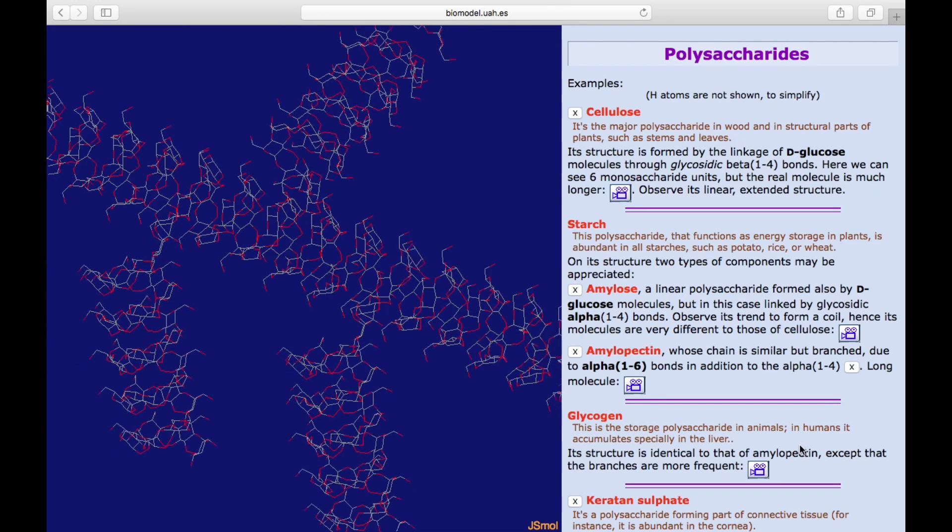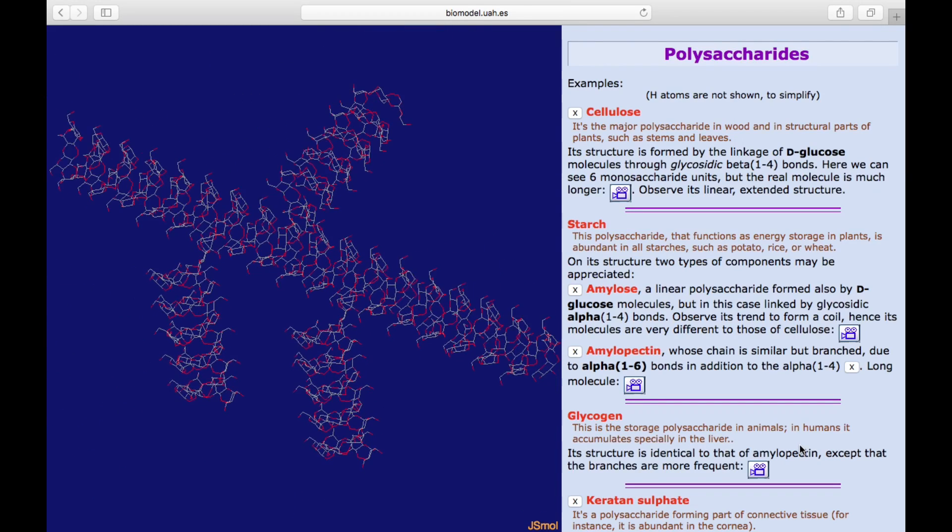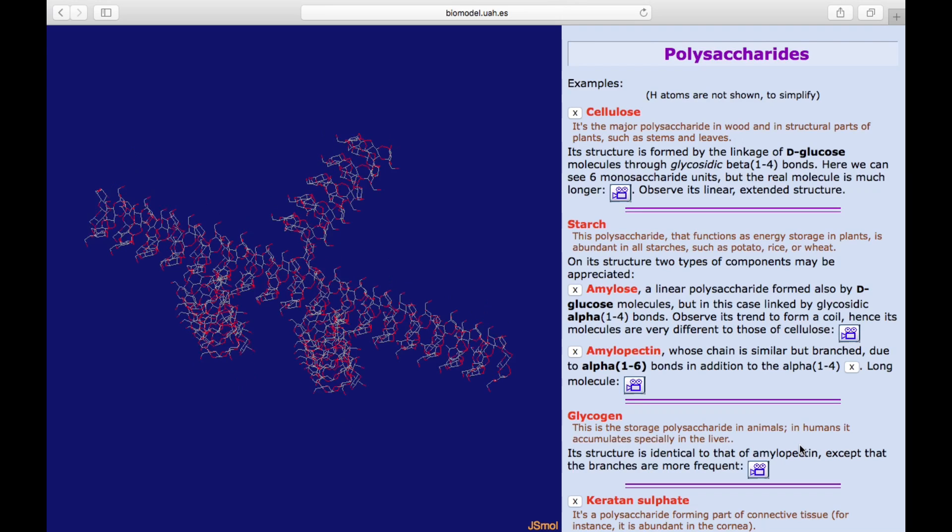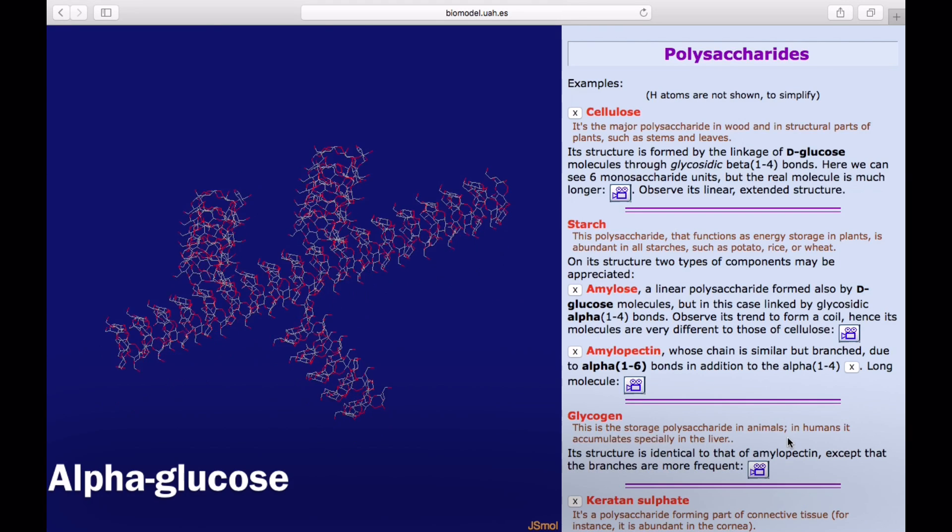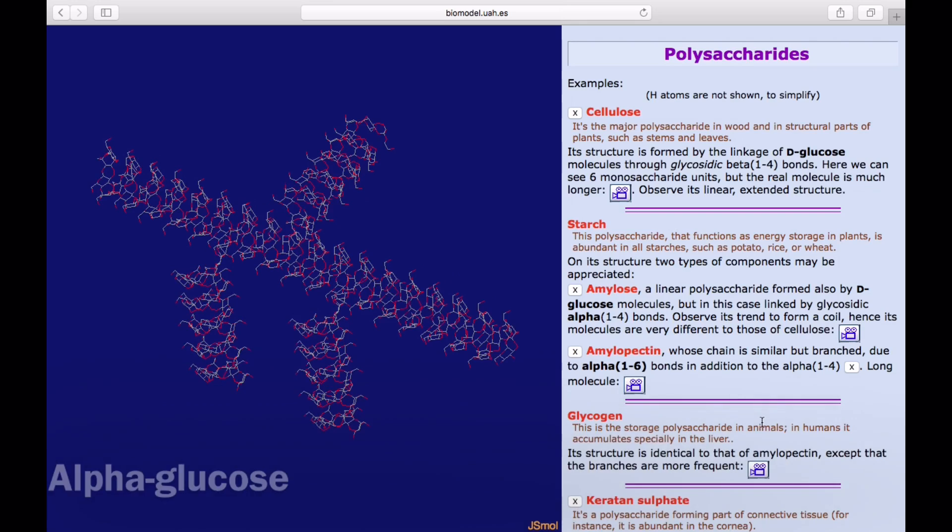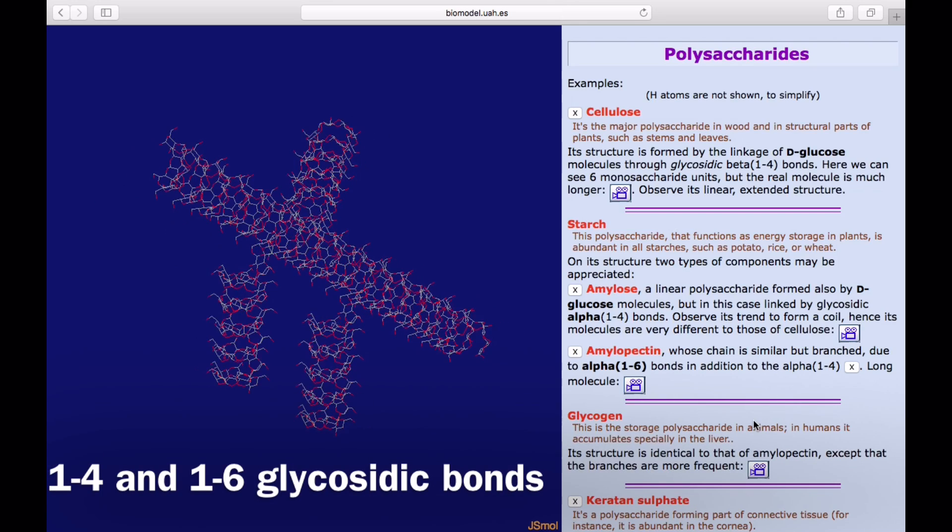Lastly, we can take a look at the structure of glycogen and its structure is virtually identical to that of amylopectin. They both use alpha-glucose and they both have 1-4 and 1-6 glycosidic bonds.